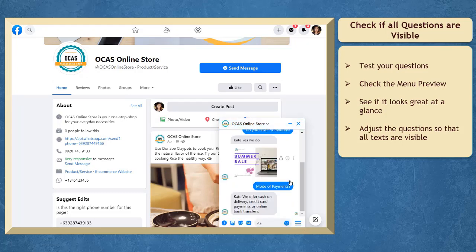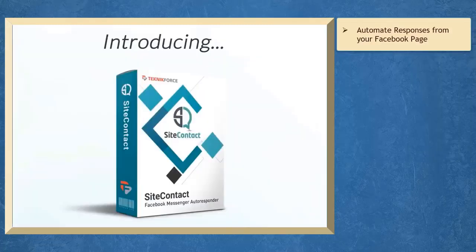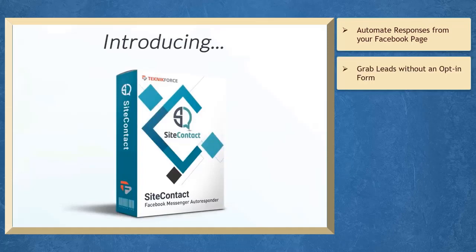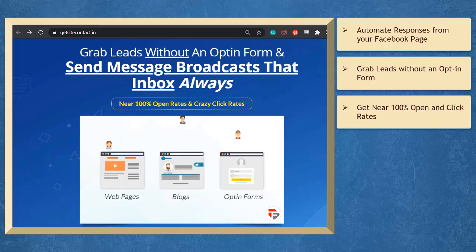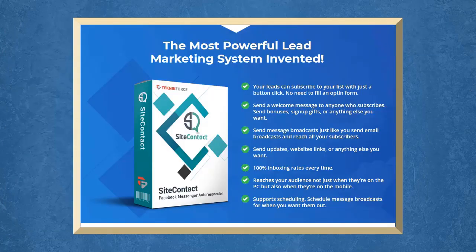Now that you know about setting up frequently asked questions and ready answers, if you want to automate the responses from your Facebook page, we have a marketing app that can help you grab leads without an opt-in form and send automated messages that get near 100% open and click-through rates. It is the first Facebook-based autoresponder on the market. With SiteContact, your leads can subscribe to your list without an opt-in form — they can even subscribe with just a click of a button.